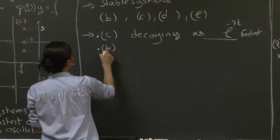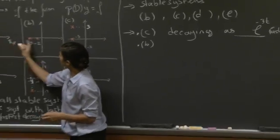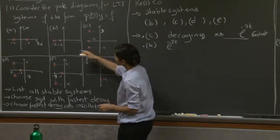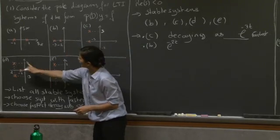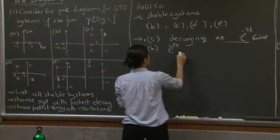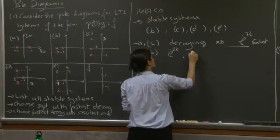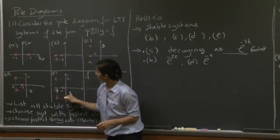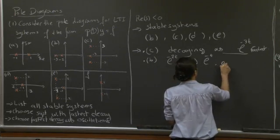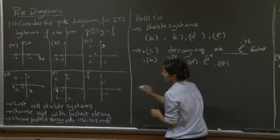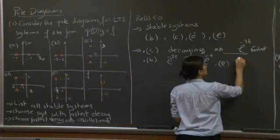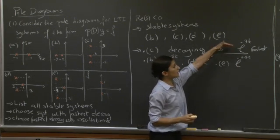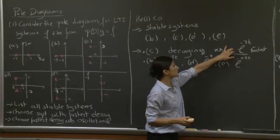For system B, the dominant term is e^(−2t). For system D, it is e^(−t). For system E, it is e^(−0.5t). So the fastest decay is definitely system C.